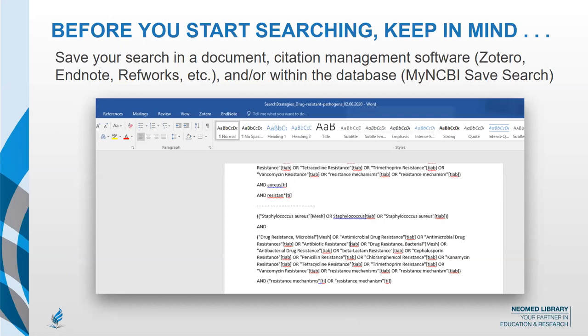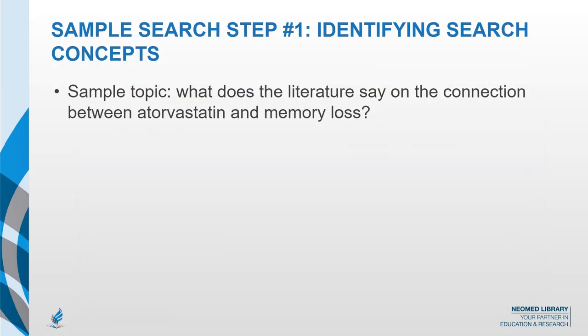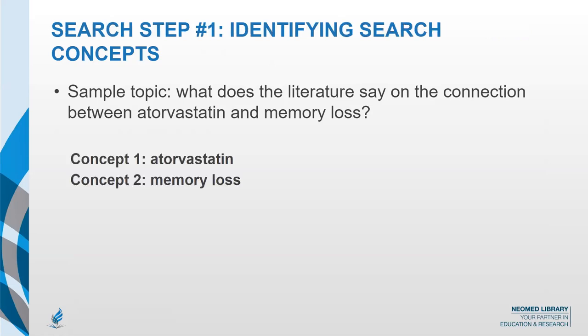Also think about Zotero, EndNote, or RefWorks as a good way to manage the citations you find and deduplicate them. For this sample search topic — what does the literature say on the connection between atorvastatin and memory loss — you can parse this out into two concepts: atorvastatin and memory loss. You're going to want to build comprehensive search strings for each concept.